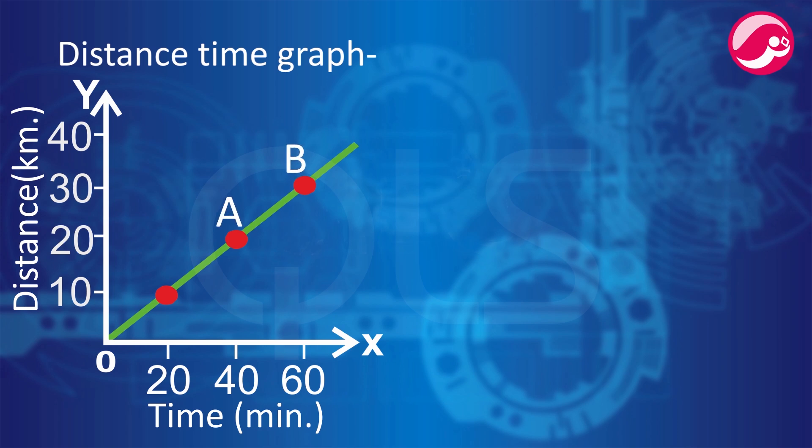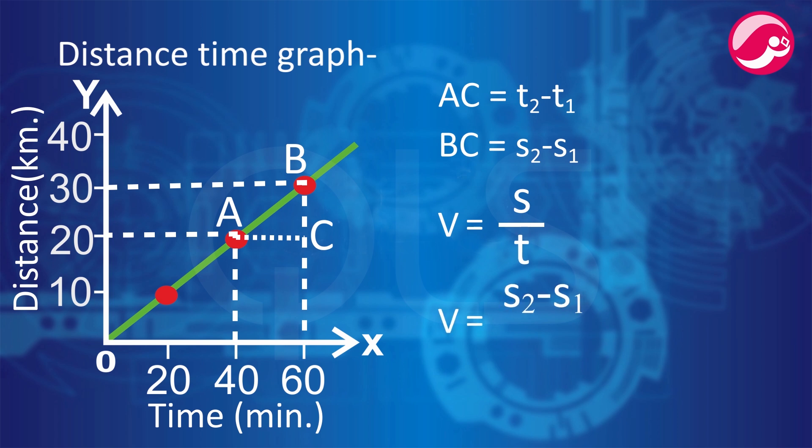Choose two points A and B. From A draw a line parallel to X axis, and from B draw a line parallel to Y axis. AC becomes T2 minus T1, this time duration, and BC becomes S2 minus S1, this distance. Now we know that the formula is V equals S upon T, so V equals S2 minus S1 upon T2 minus T1. From here we can calculate the speed.